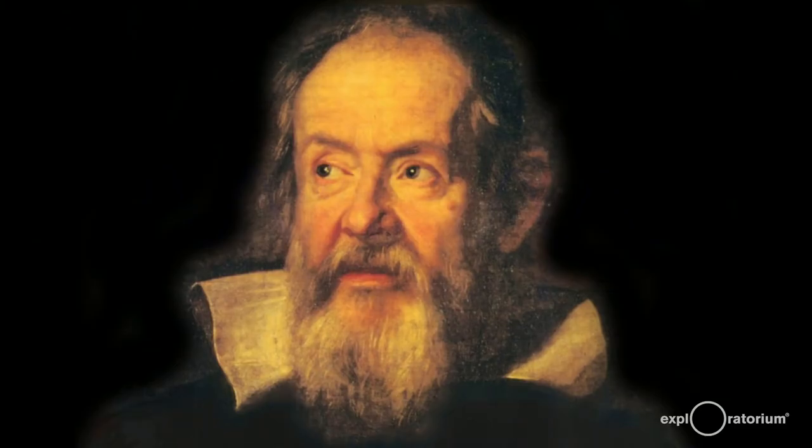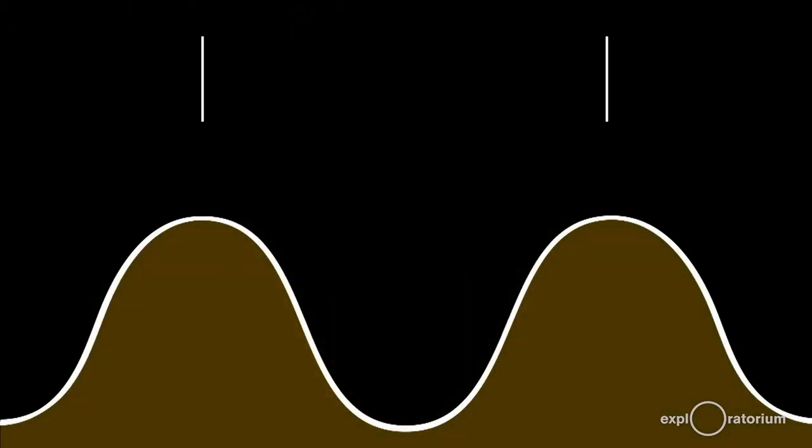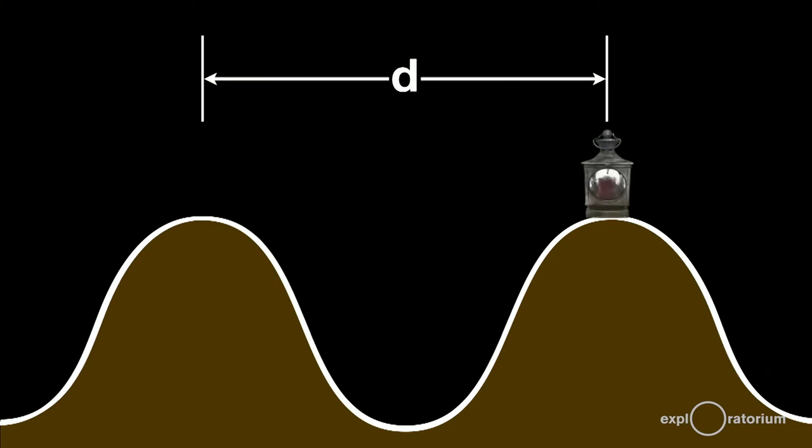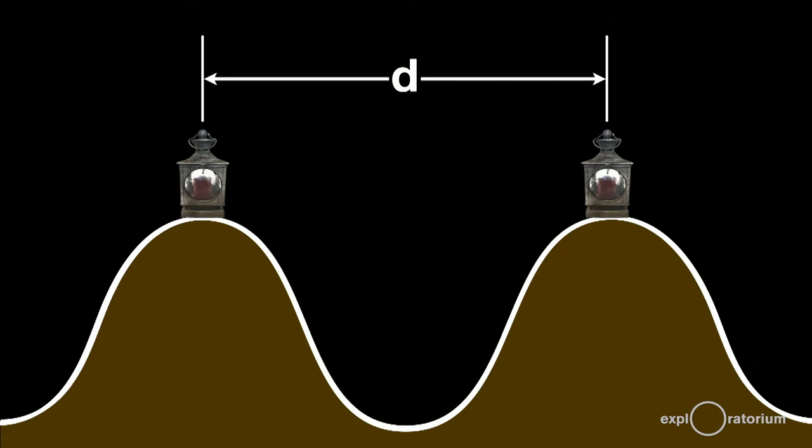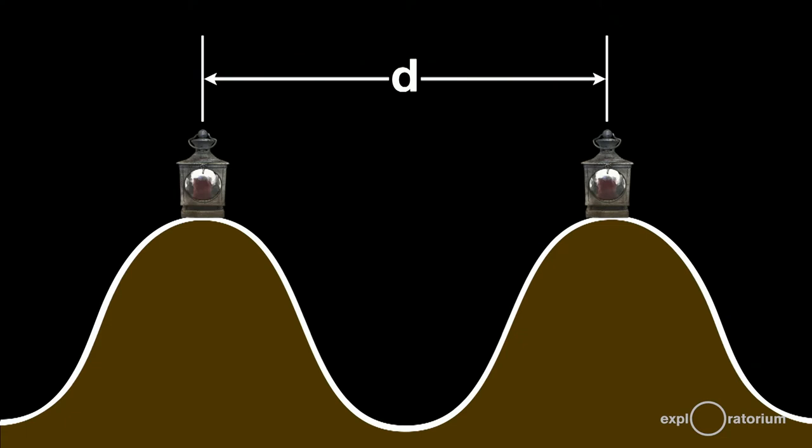Galileo first attempted to measure the speed of light. He did this by measuring the distance between two hilltops. Galileo sent his assistant to the far hilltop with a shuttered lantern. Galileo stood on the nearer hilltop with an identical lantern. The plan was for Galileo to open the shutter of his lantern and then for his assistant to open the shutter of his lamp as soon as he saw the light from Galileo's. Using his pulse for timing, there were no clocks yet.